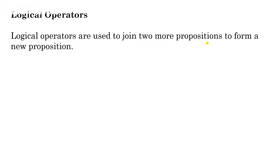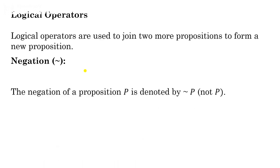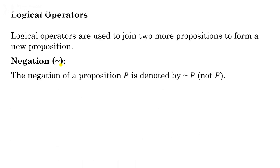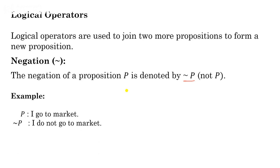Logical operators are used to join two or more propositions to form new propositions. We will go through them one by one. The first is negation. Negation is a unary operator — it is used for only one proposition. If p is a proposition, then the negation of p is denoted ¬p and read as 'not p.' It negates the proposition. For example, if p is 'I go to market,' then ¬p is 'I do not go to market.'